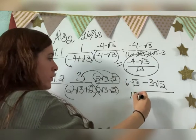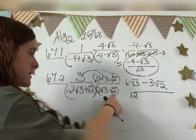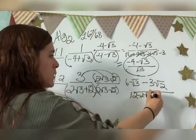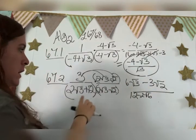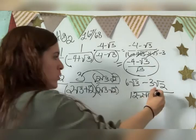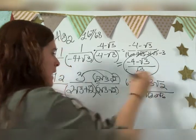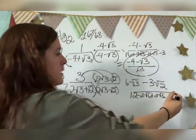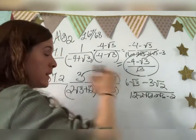This times this is gonna be, again, 12. This times this is gonna be minus 2 square root 6. This times this is gonna be plus 2 square root 6. This times this is gonna be minus 2. Okay, now we're, it's easy.